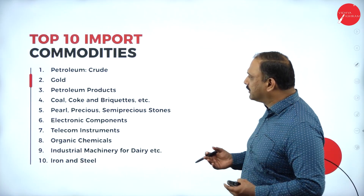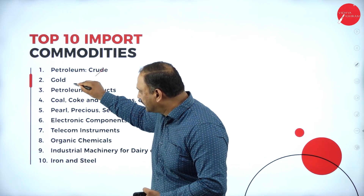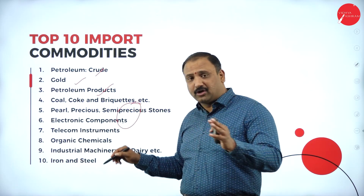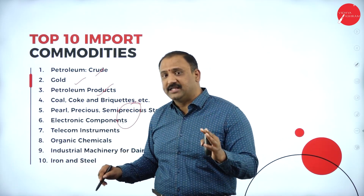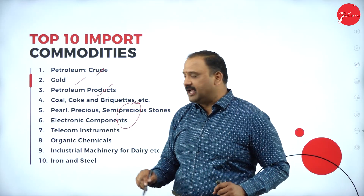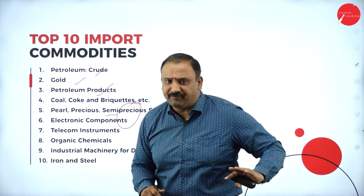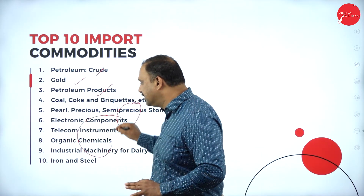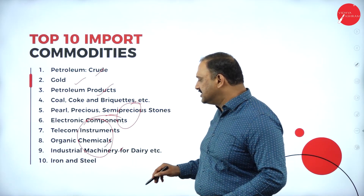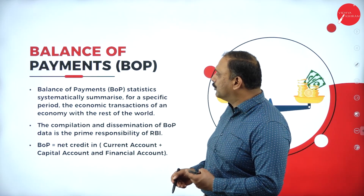Regarding imports, the import commodities include petroleum, gold, petroleum products, coal, pearls and precious items, and electronic components. We are concentrating on electronic components because of the semiconductor problem — India is now trying to focus on that. With the advent of iPhone being manufactured in India, we are taking up a very big space and will soon become an exporter. We also import organic chemicals, industrial machinery, and iron and steel.